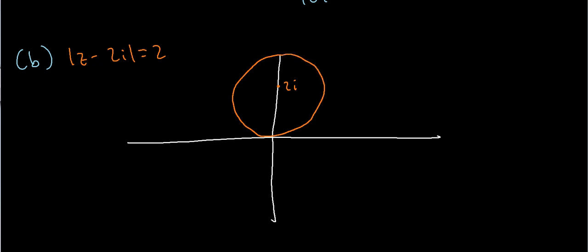Since this is a contour of radius 2, we can find out where this circle intersects the imaginary axis. Well, since it has radius 2, this point has got to be 4i, because it's a distance of 2 from the center of the circle. Likewise, this point has got to be 0, because it has to be 2 away from 2i.